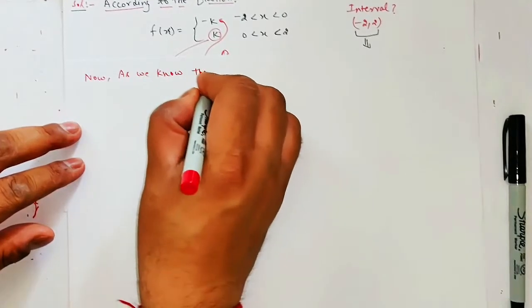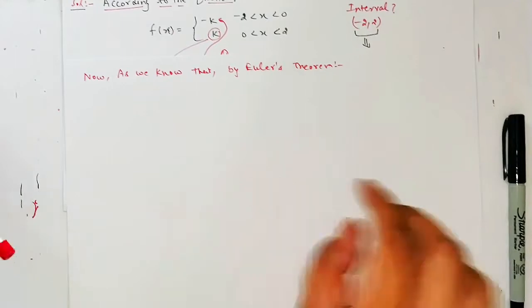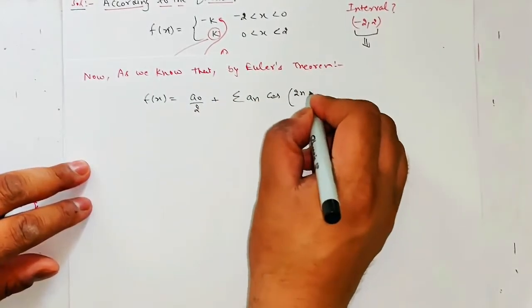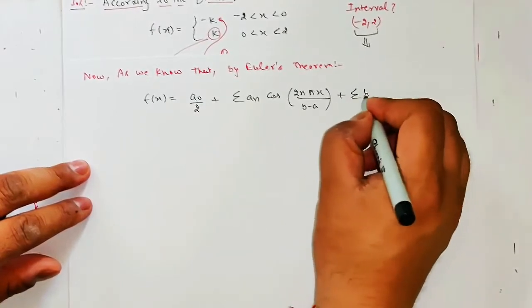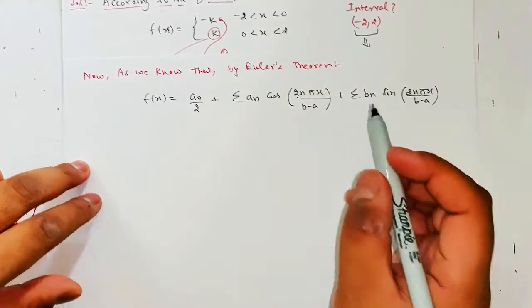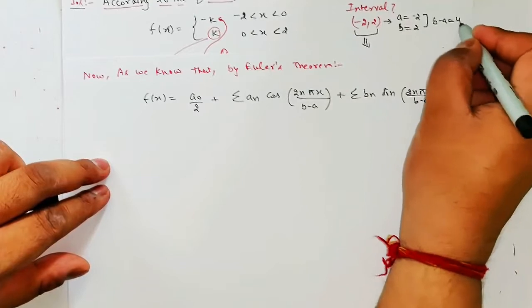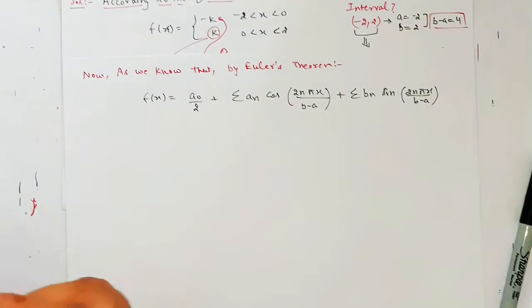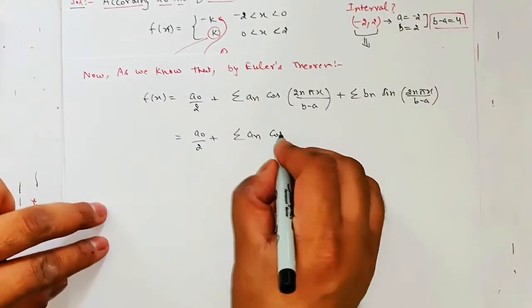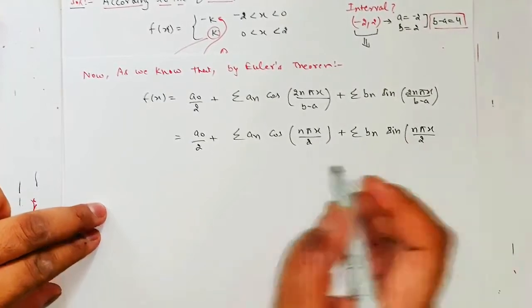As we know that by Euler's theorem, formula toh aapko pata hai: f(x) = a₀/2 plus summation aₙ cos(2nπx/(b−a)) plus summation bₙ sin(2nπx/(b−a)). Yahan aapko b minus a ki value chahiye — toh b minus a interval se nikalte hain. a = −2 lower limit, b = 2 upper limit, toh b − a = 4. Toh yeh aaya f(x) = a₀/2 + summation aₙ cos(nπx/2) + summation bₙ sin(nπx/2). Yeh mera aa gaya f(x) ka formula. Isme a₀ aur aₙ already nikal chuke hain — woh 0 aaya. Hume sirf nikaalana hai bₙ.